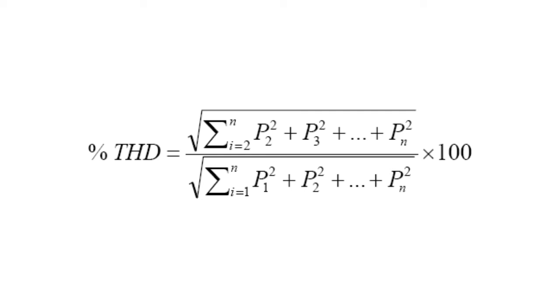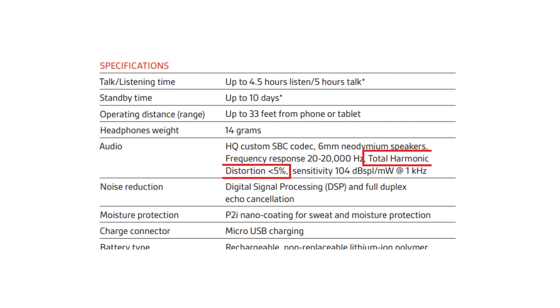Mathematically, this would be the sum of the magnitudes of all components except the fundamental, divided by the sum of all components including the fundamental. This gives us a percentage which at the end is the total harmonic distortion.